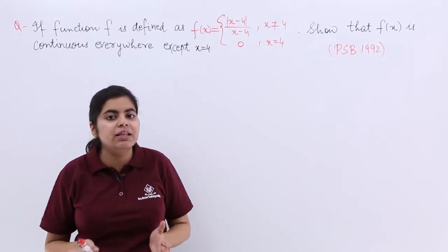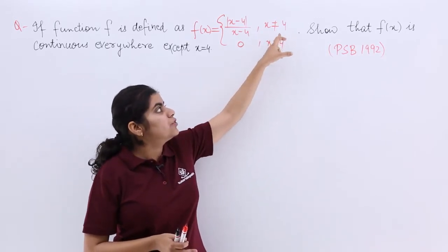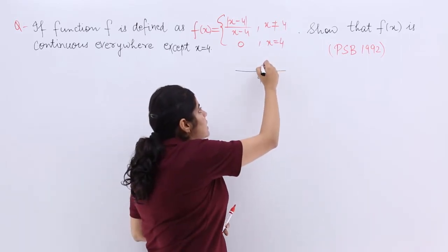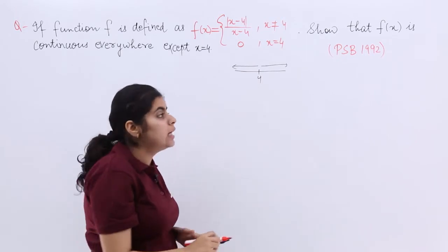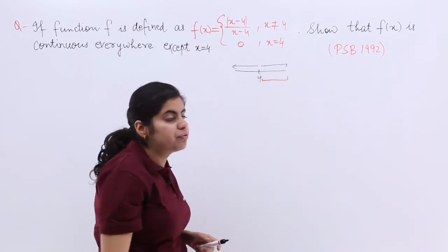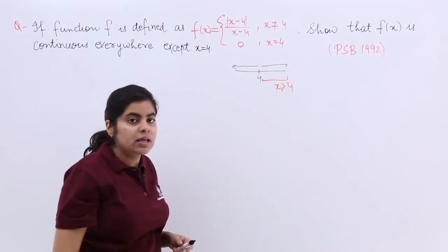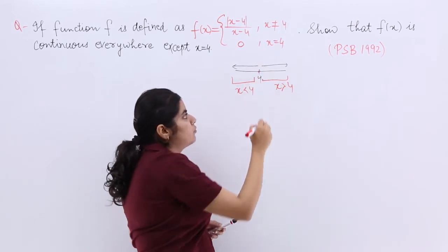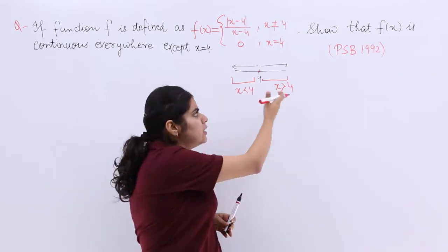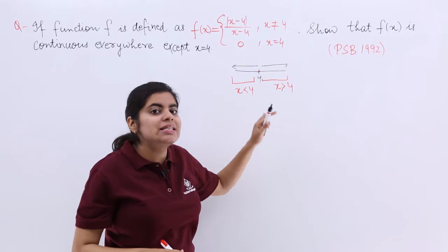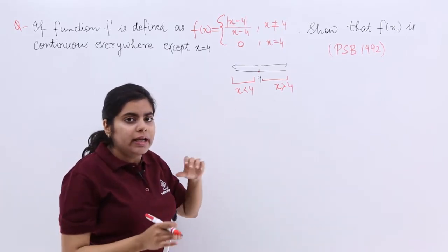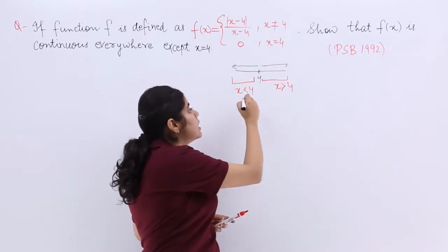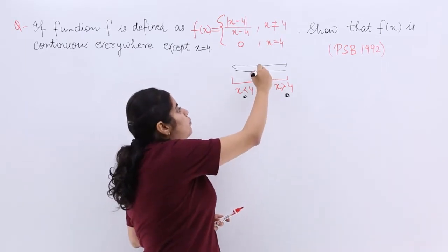To show about the function, we have to define it properly first. The function is defined in two branches: x not equal to 4 and x equal to 4. If we plot x equal to 4, the area on the right is x greater than 4, the area on the left is x less than 4, and the point itself is x equal to 4. Both x greater than 4 and x less than 4 fall in the category of x not equal to 4.